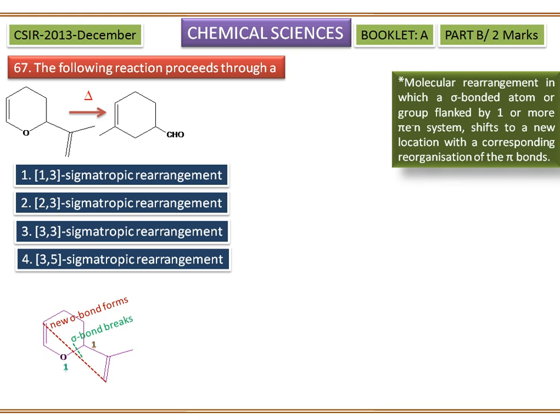To determine the order of a given sigmatropic rearrangement, number the atoms of the bond being broken as one, and then count the atoms in each direction from the broken bond to the atoms that form a new sigma bond in the product, numbering consecutively.